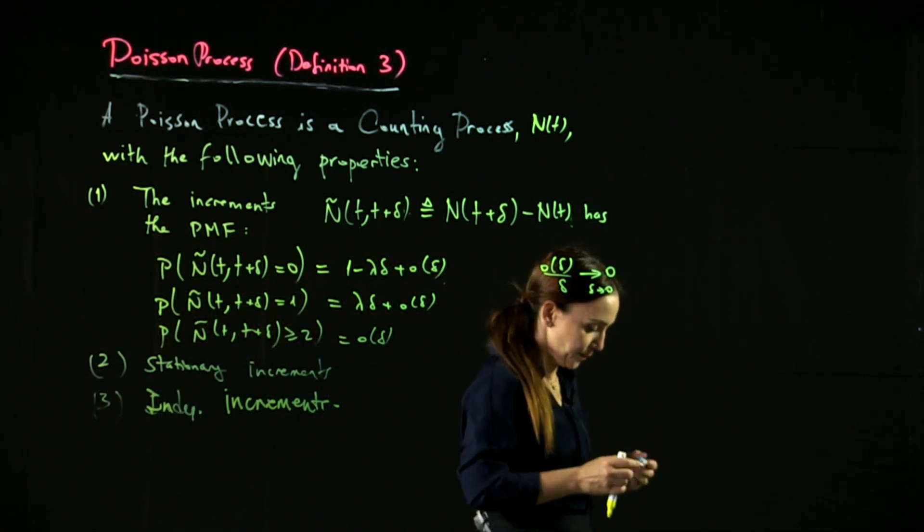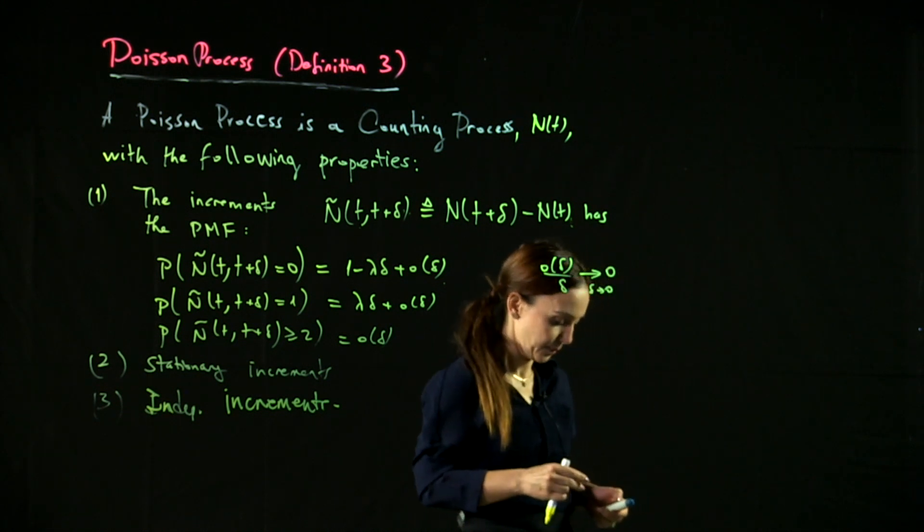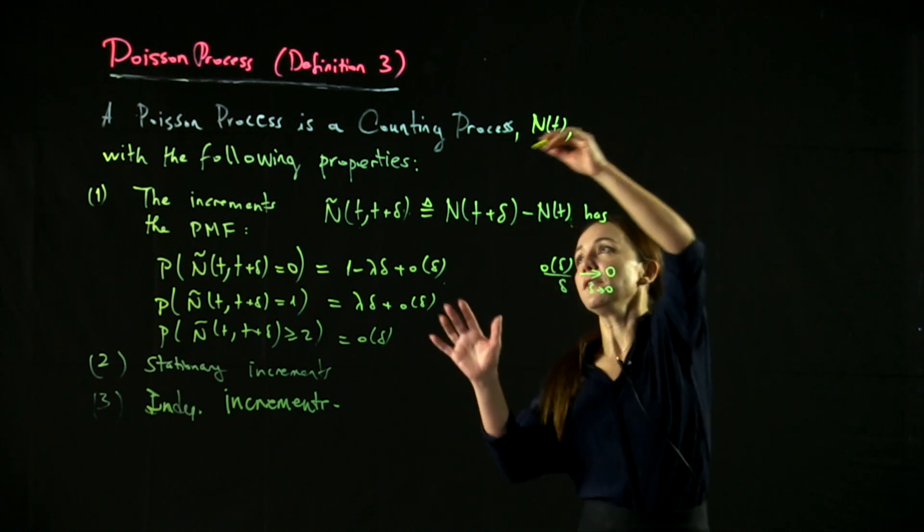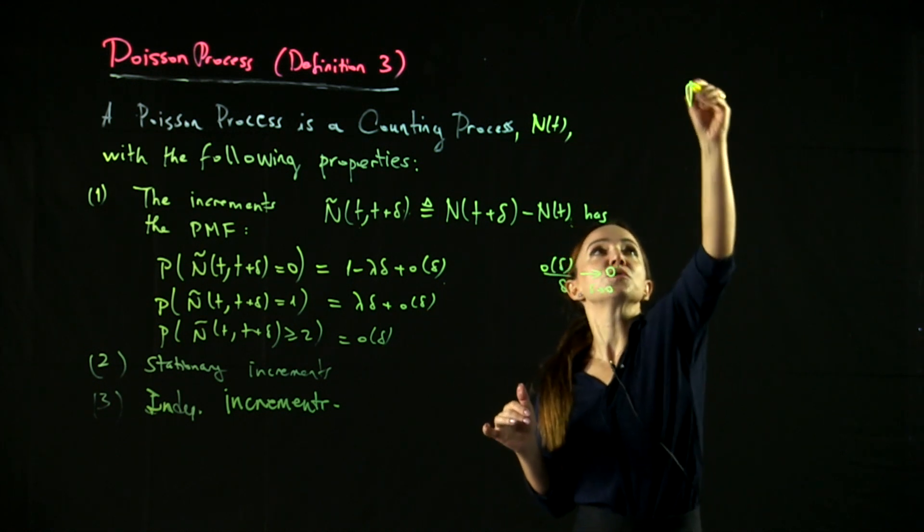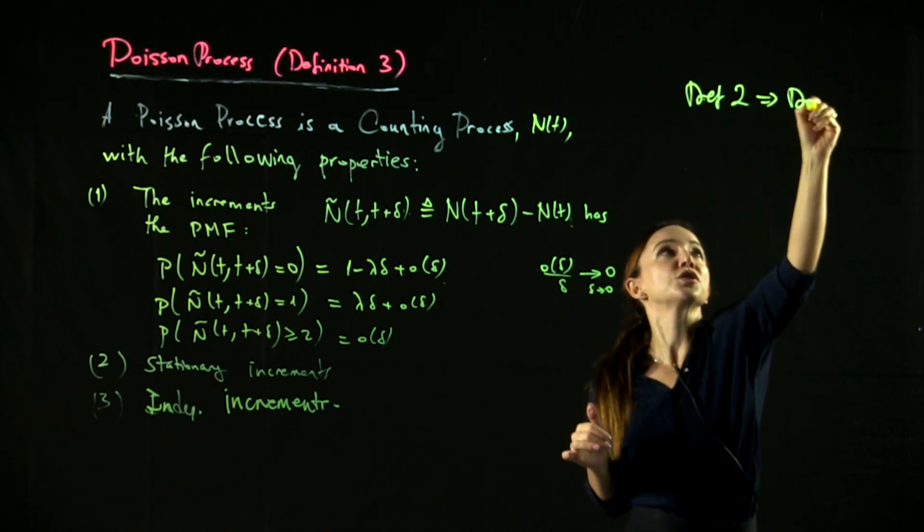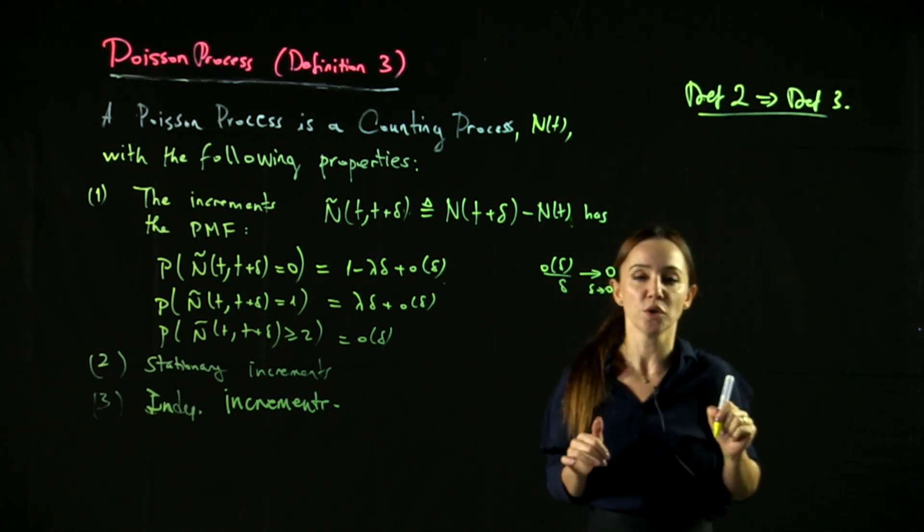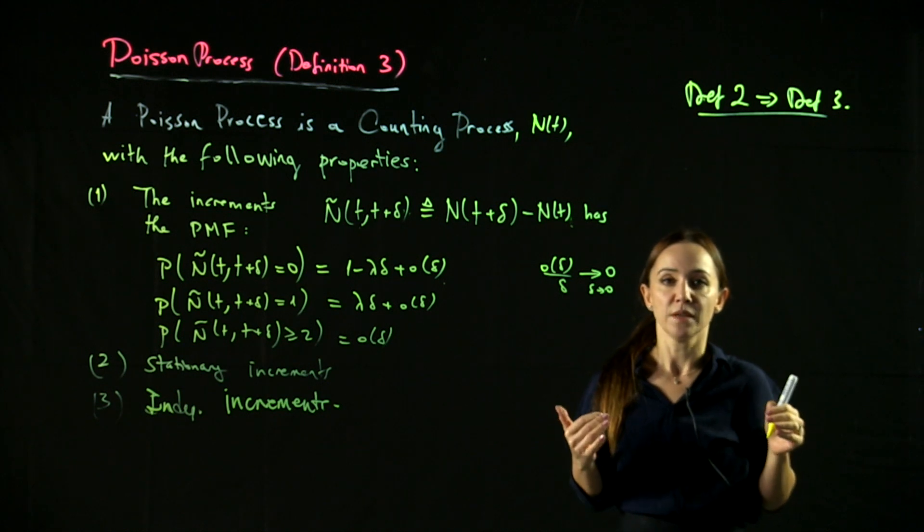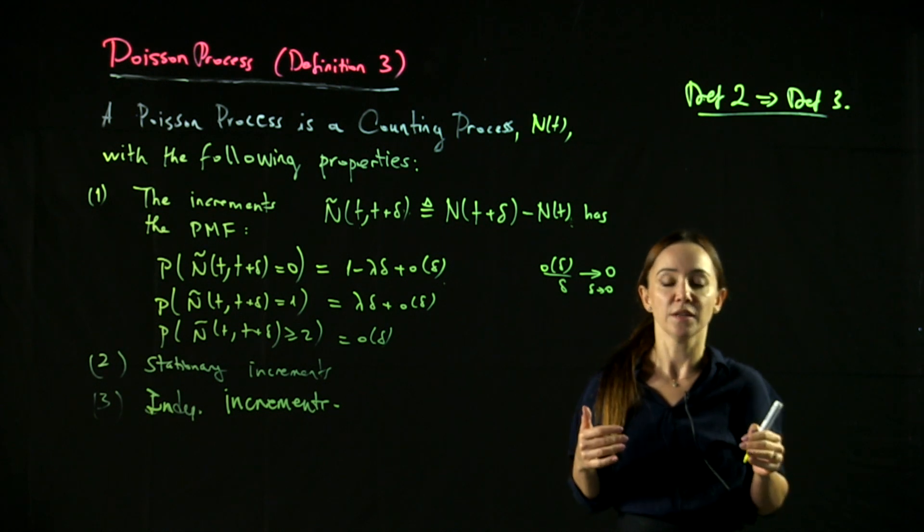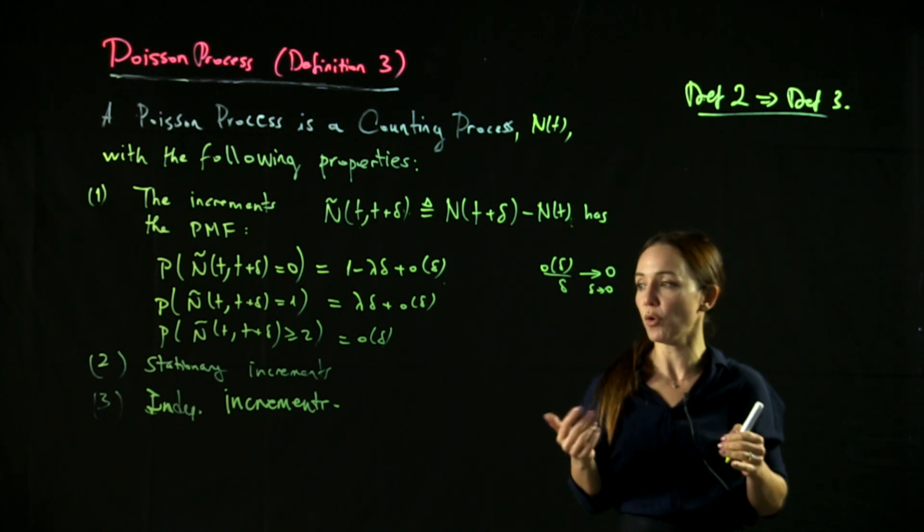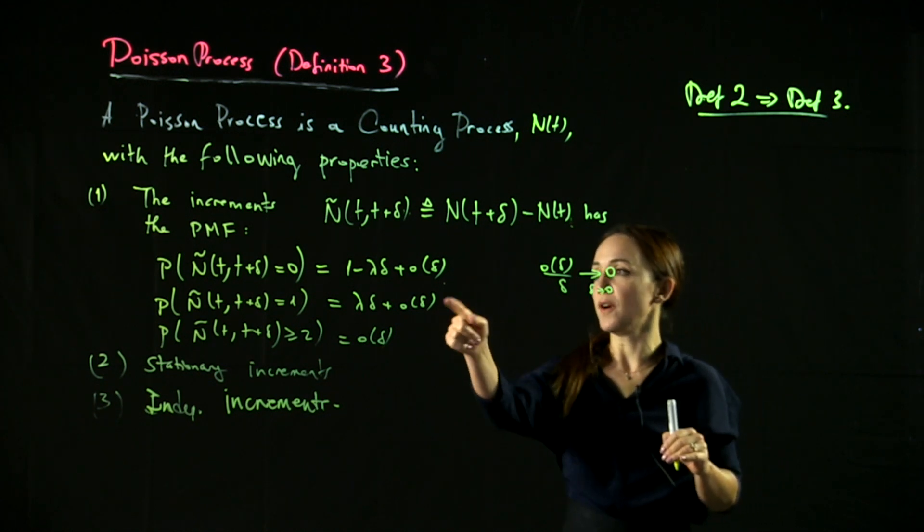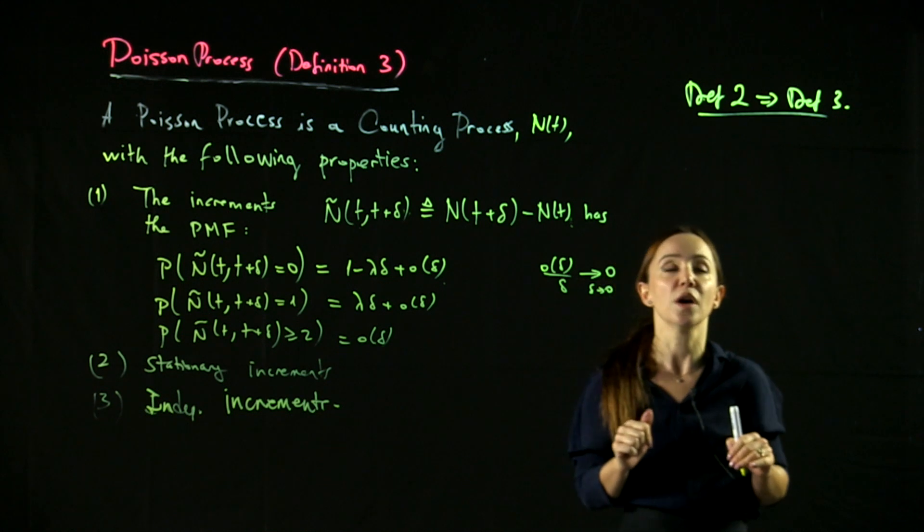Now, we can show that definition 3 actually follows from definition 2. So definition 2 implies definition 3. Remember, definition 2 said the increments have the Poisson PMF and furthermore, the increments are stationary and independent. So this clearly follows from the first item.